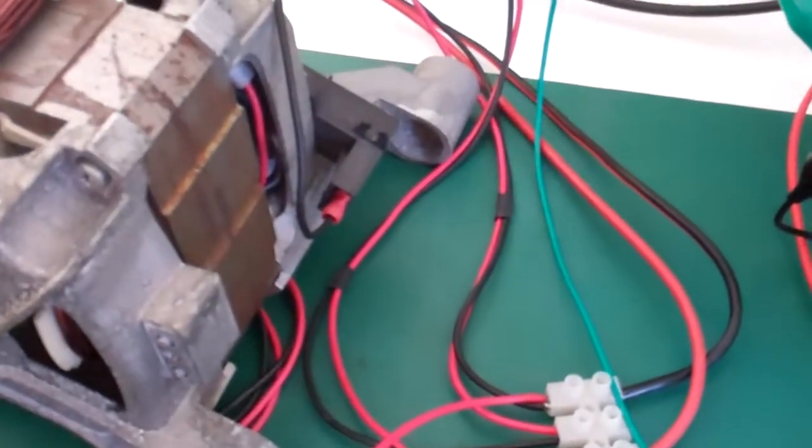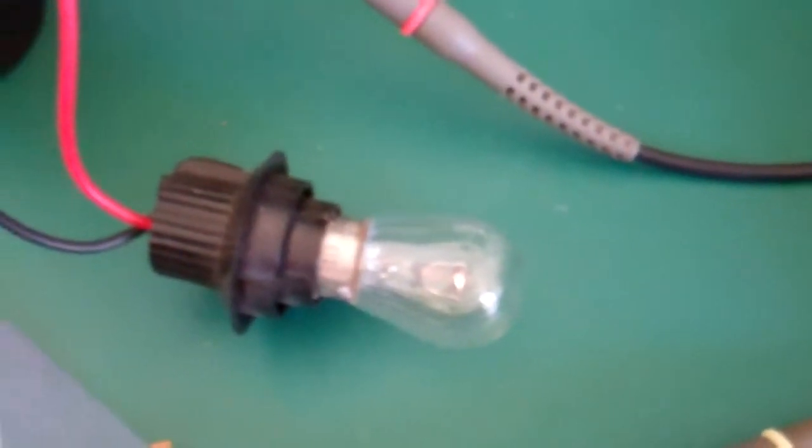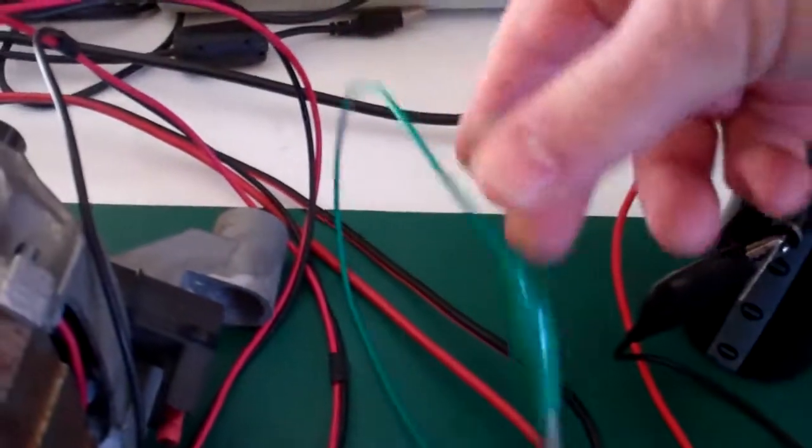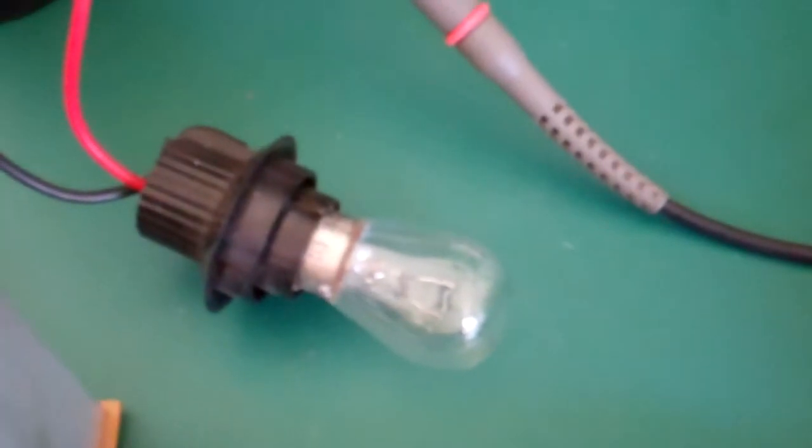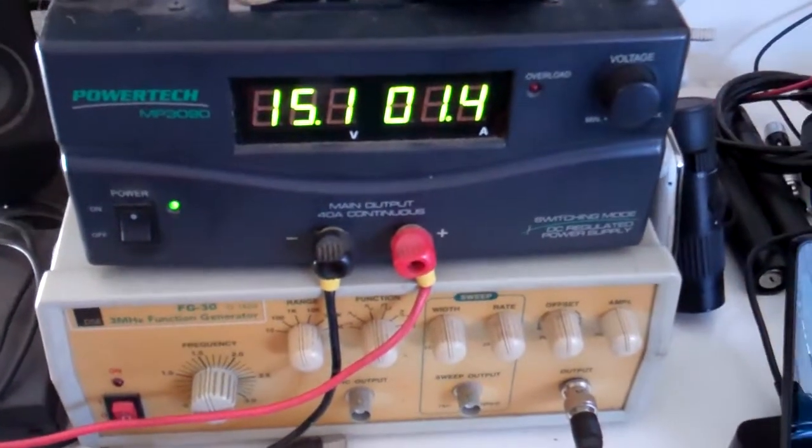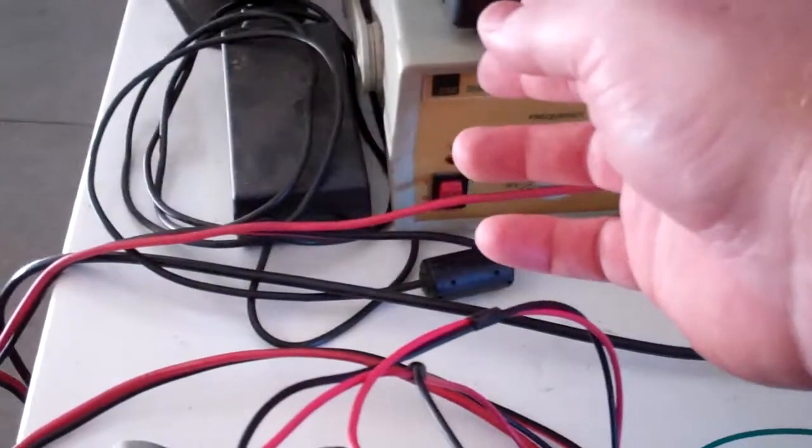So you can see when we're bucking, we have an output. When we're in free running mode, there's no output. But the current is still pretty much the same. There's really no change on the current. It really doesn't change at all.